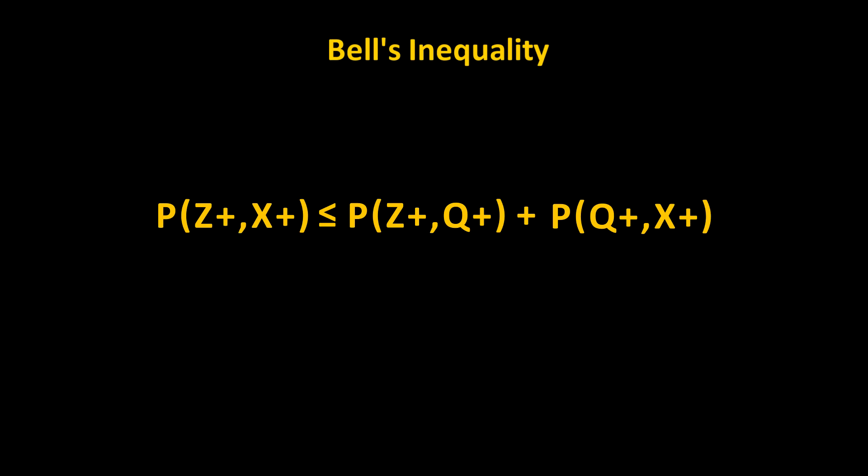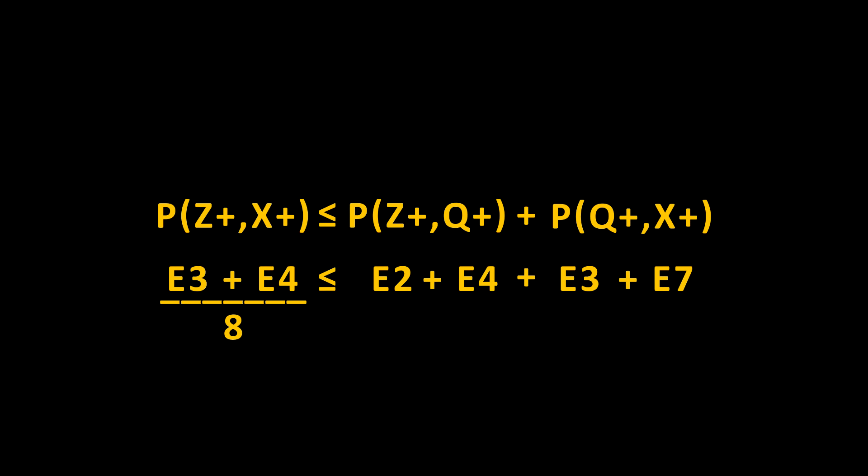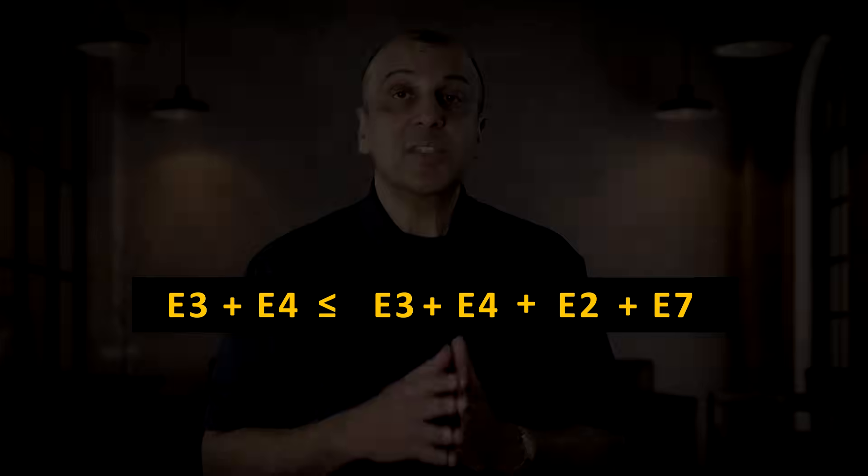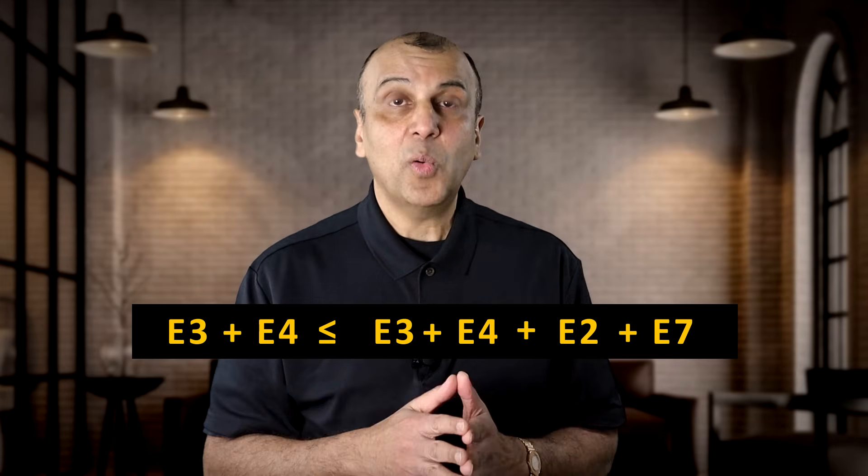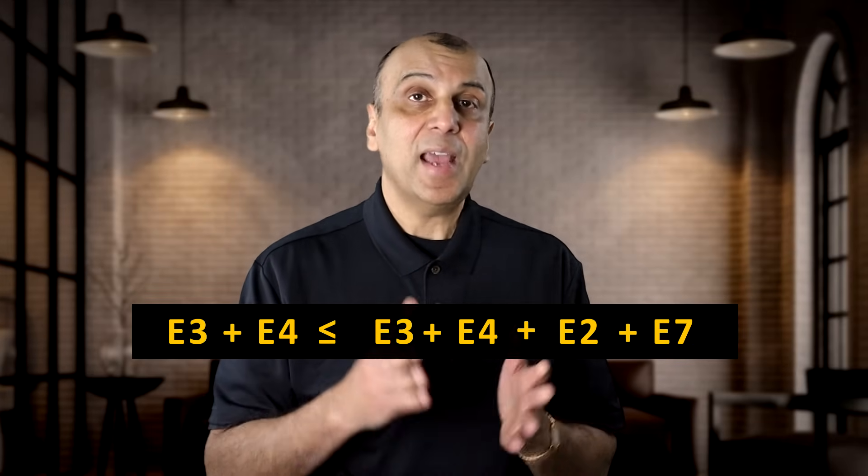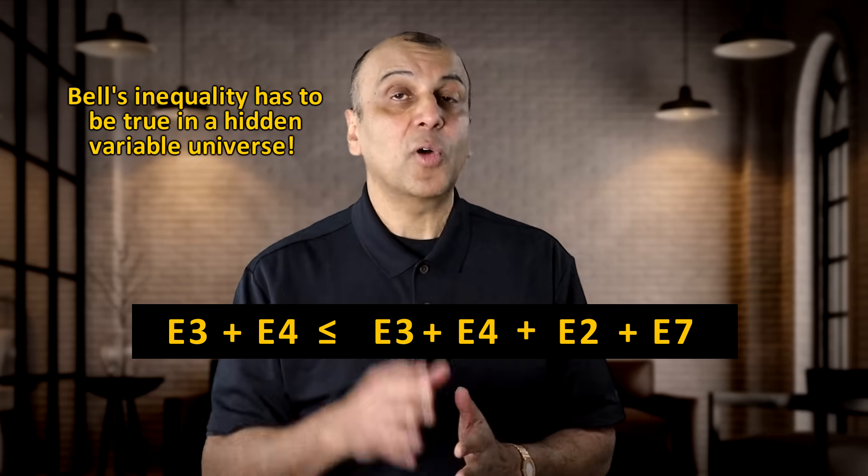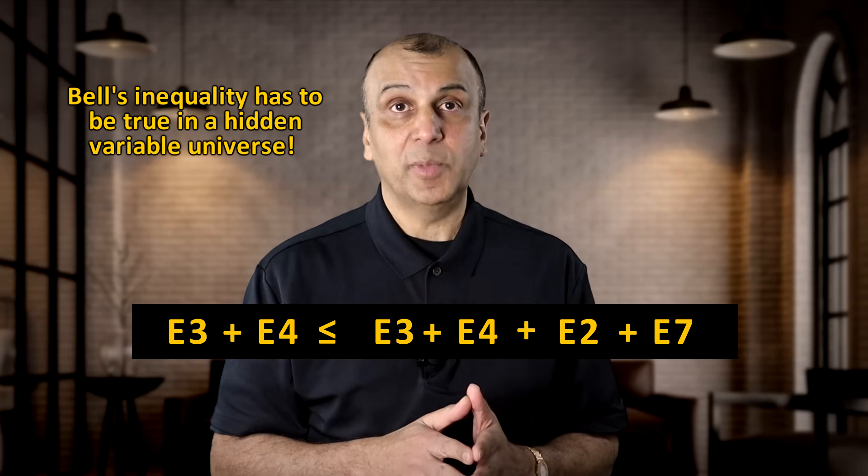Now I can prove this is true by doing simple math. E3 plus E4 divided by 8 is equal to E2 plus E4 plus E3 plus E7 divided by 8. The 8s cancel out and we rearrange the order of addition, and we're left with this: E3 plus E4 is less than or equal to E3 plus E4 plus E2 plus E7. This makes total sense because E3 and E4 are on both sides of the equation and E2 and E7 have to be positive. So this inequality absolutely has to be true for any hidden variables theory to be true.